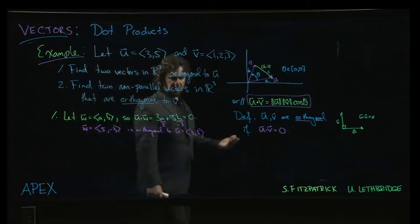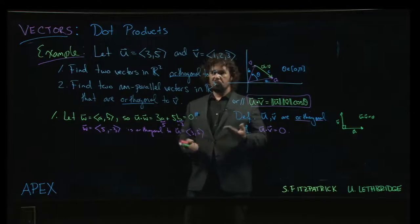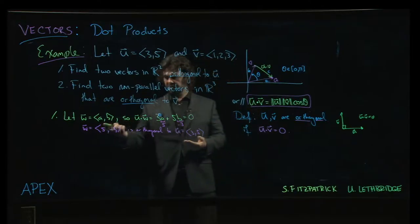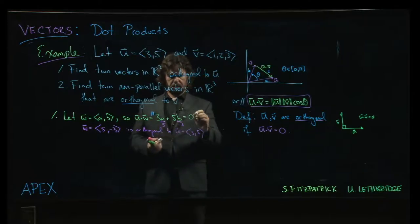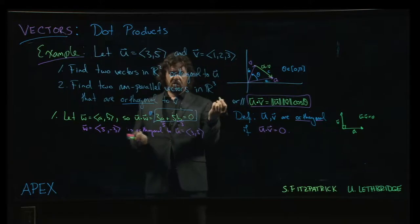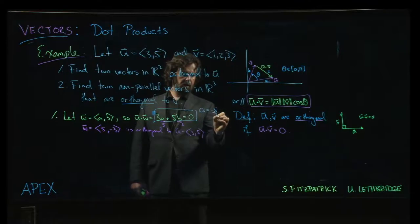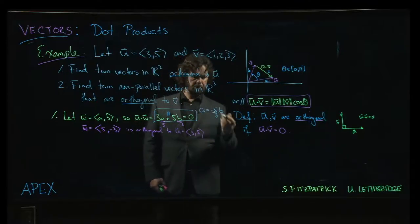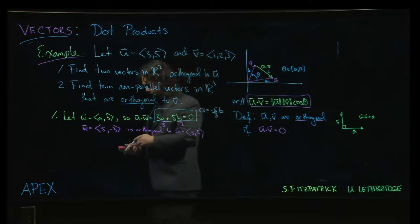Those would be additional vectors that are orthogonal to the one we were given, but only up to a scalar multiple are they different from the one we already found. In fact, from this equation here you could solve for a. a would have to be minus 5 over 3 times b. So once you choose a value for b, you're forced into the value for a. There's not as much freedom as you might think.